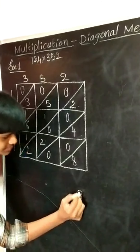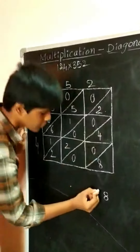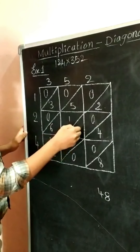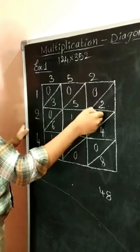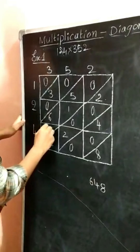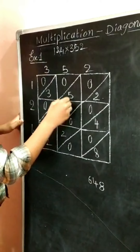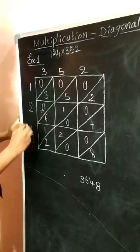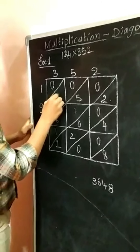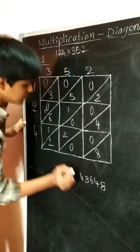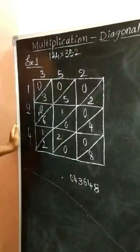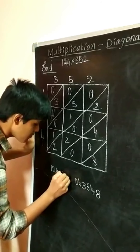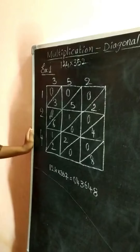Write 8 as it is. 0+0=0. 0+4=4. 2+2=4, 4+0=4, 4+2=6. 1+6=7, 7+1=8, 8+5=13, 13+0=13; write 3 here and carry 1 forward. 1+0=1, 1+3=4, 4+0=4. And 0 as it is. So the product of 124 and 352 is 43,648.